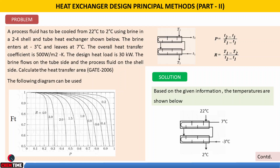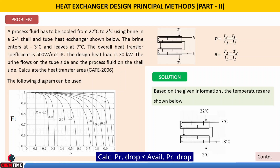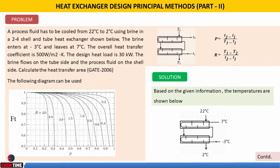Now coming to the problem — first and foremost, why do we go for a 2-4 shell and tube, 2-pass configuration? This is required if the calculated pressure drop is less than the available pressure drop. We go for multi-pass to increase the heat transfer coefficient and to effectively utilize the available pressure drop.